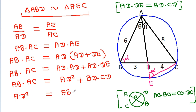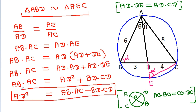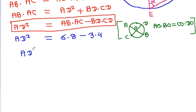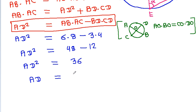So AD squared is equal to AB times AC minus BD times CD. AD squared is equal to 6 times 8 minus 3 times 4, which is 48 minus 12. So AD squared is equal to 36, and AD is equal to 6.